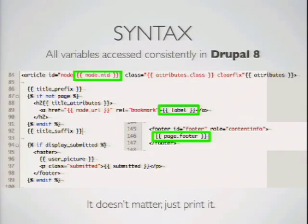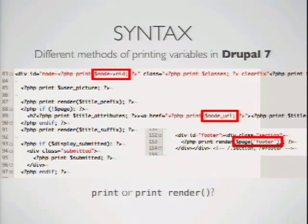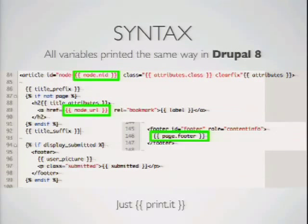In Twig, we've eliminated the need to print things differently. It doesn't matter whether it's an object, an array, or a plain variable — if you want to print it, you just print it. There are also different ways we print things in Drupal 7: sometimes you just print them to the page, and sometimes you have to print render them. In Twig, you don't have to render your renderables — you can print them exactly like everything else, and Twig will handle the rendering for you. Just print it.